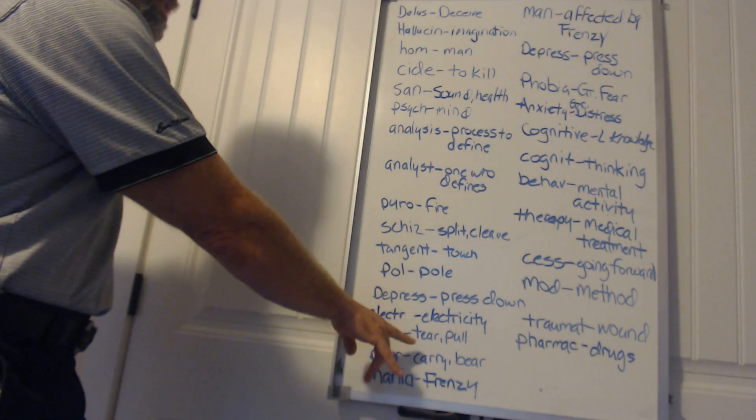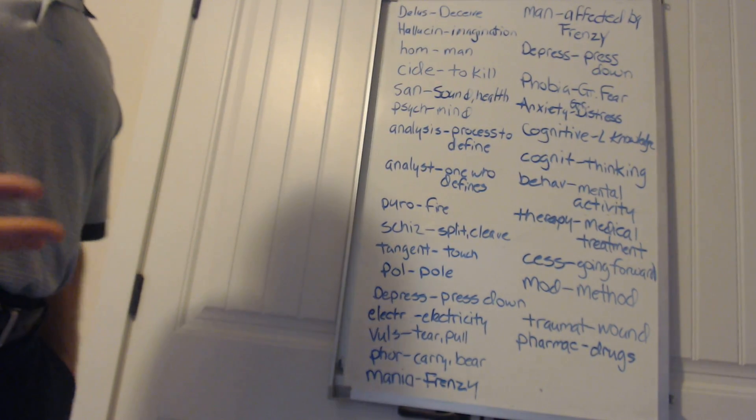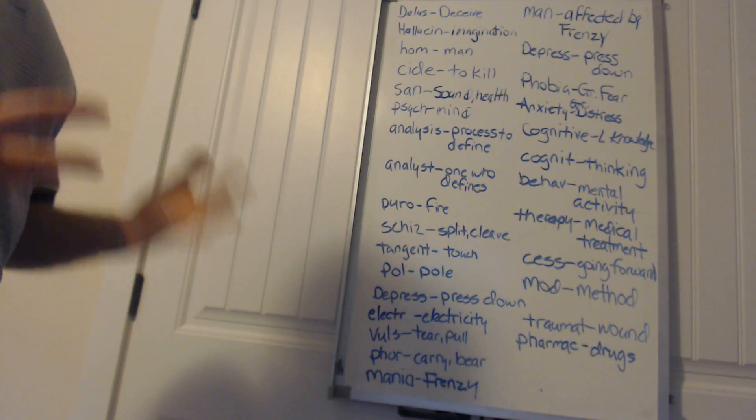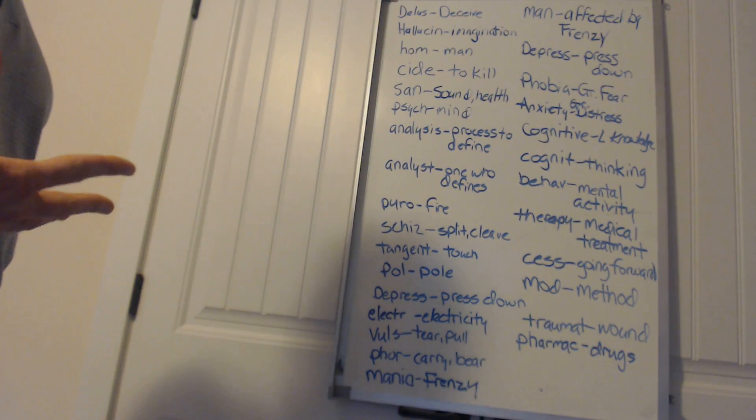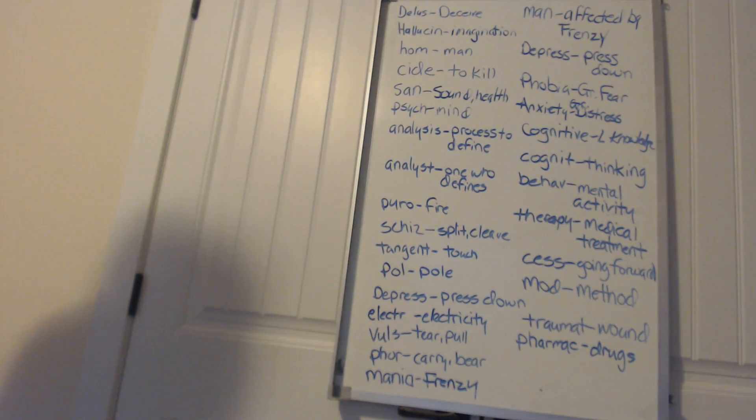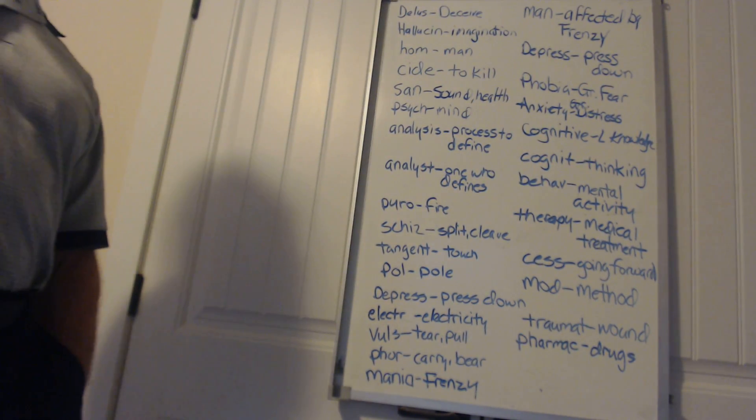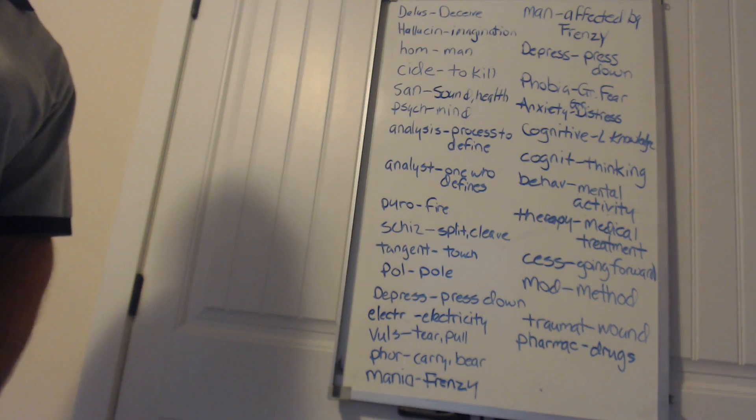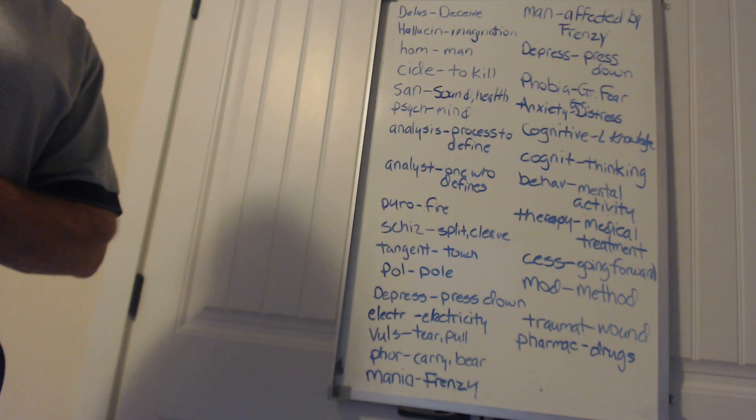Vulse means to tear or pull. Somebody who goes into convulsions would violently tear and pull at themselves. Four means to carry or bear. Euphoria would mean to carry out or bear a psychological well-being.